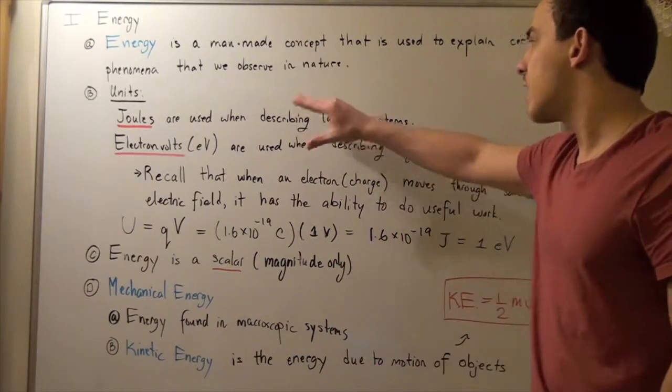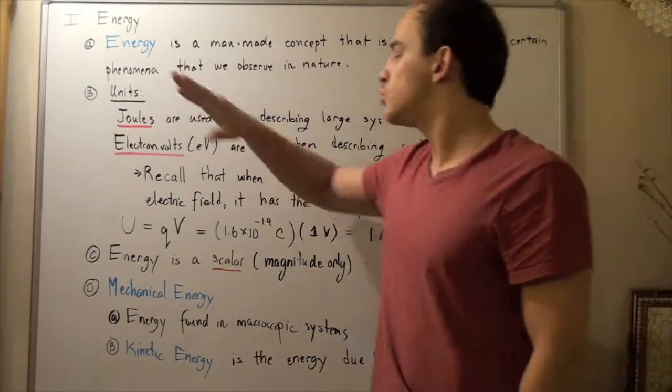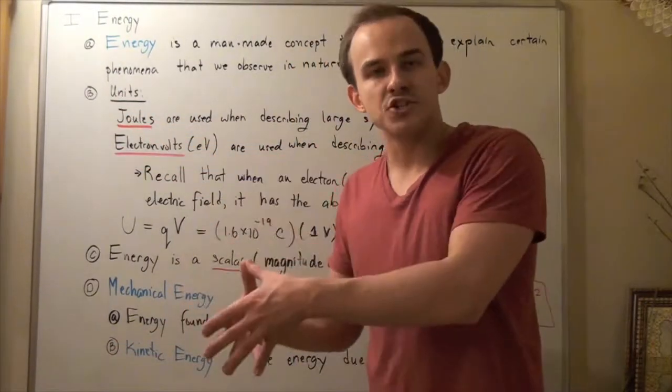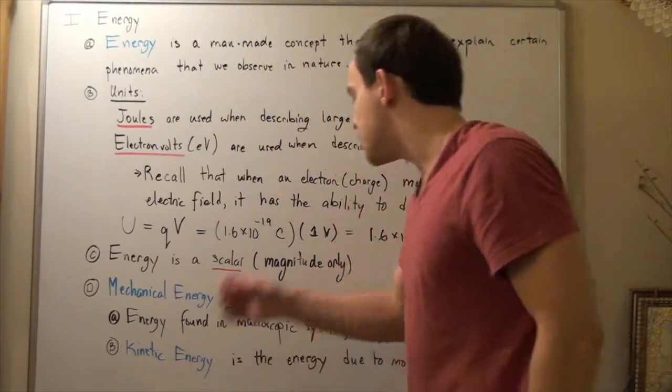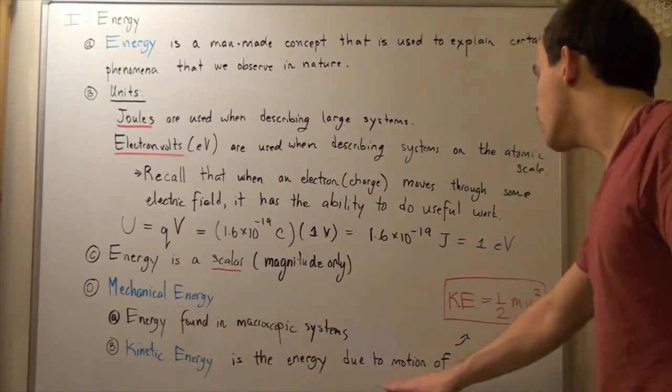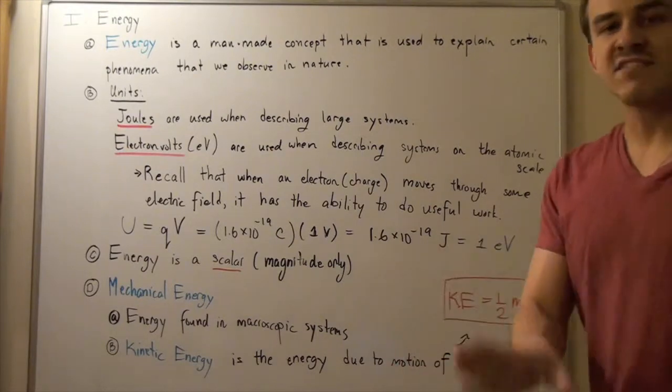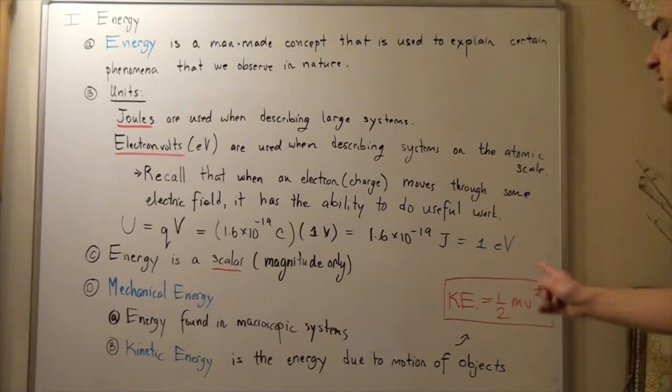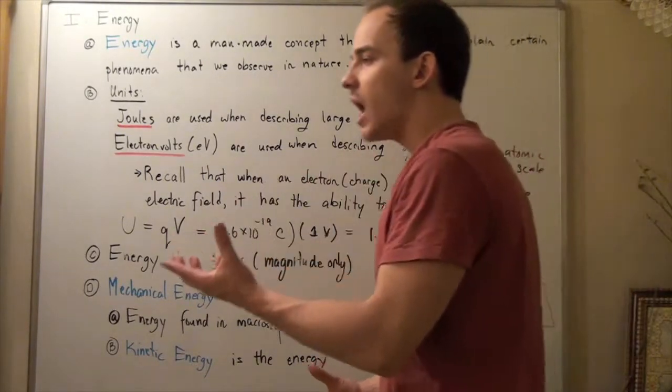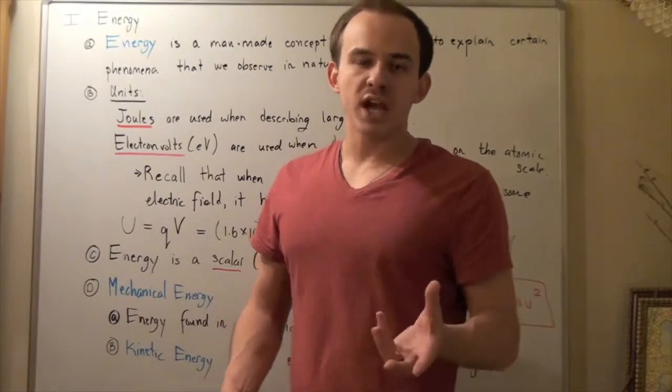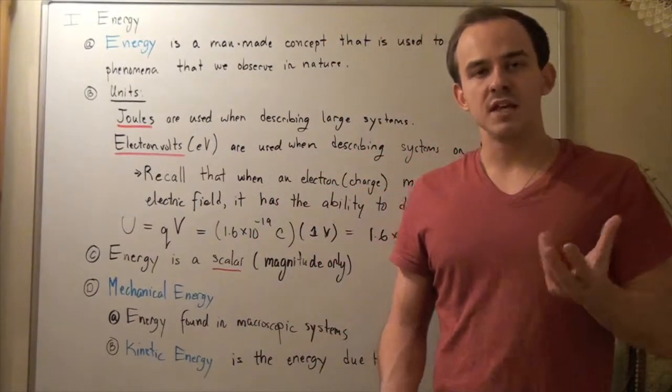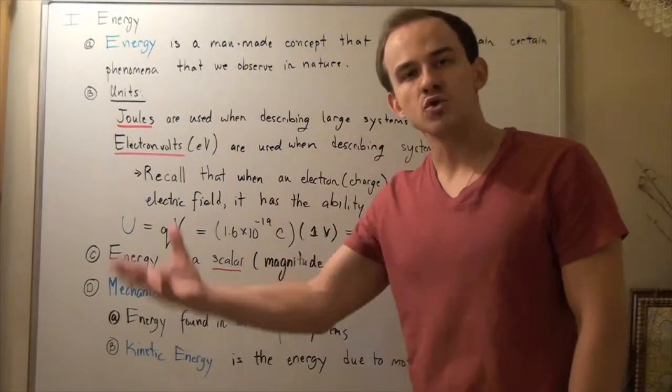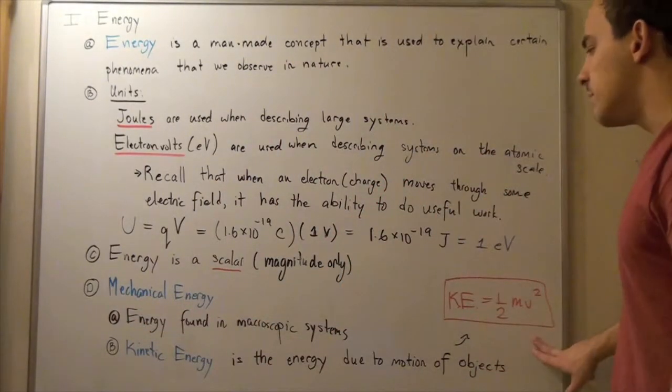So, once again, macroscopic systems are described using joules. And this energy can be broken down into kinetic energy and potential energy. Kinetic energy is simply the energy due to motion of objects. And it's given by the following formula. Kinetic energy is equal to one-half mass times V squared. So, earlier, we spoke about a moving object. And that moving object, if it has some velocity V and some mass M, we can find the amount of kinetic energy stored in its motion by using the following formula.